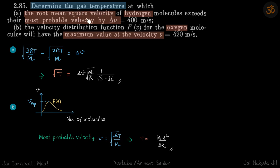Determine the gas temperature at which RMS velocity of hydrogen molecules exceeds most probable velocity by Δv. So √(3RT/M) minus √(2RT/M) is given as Δv. We need to find the temperature, so we can just find it. Second part: